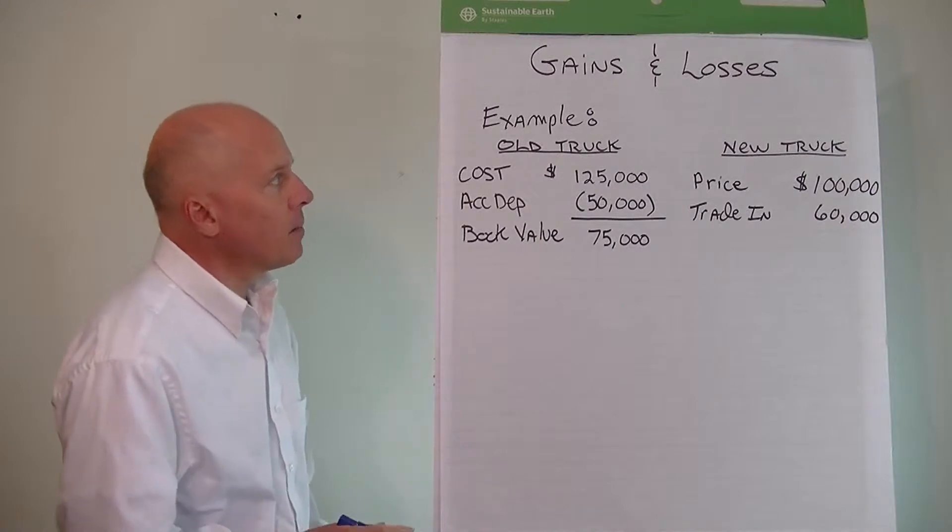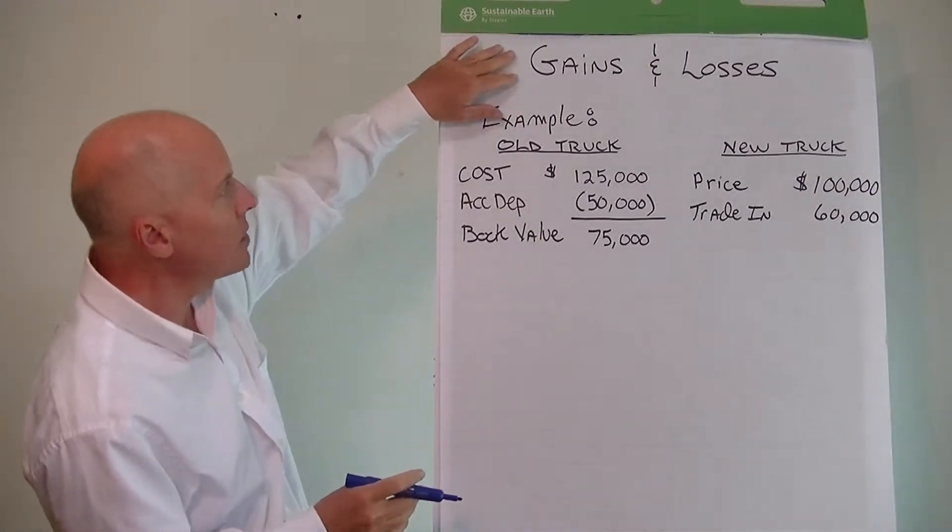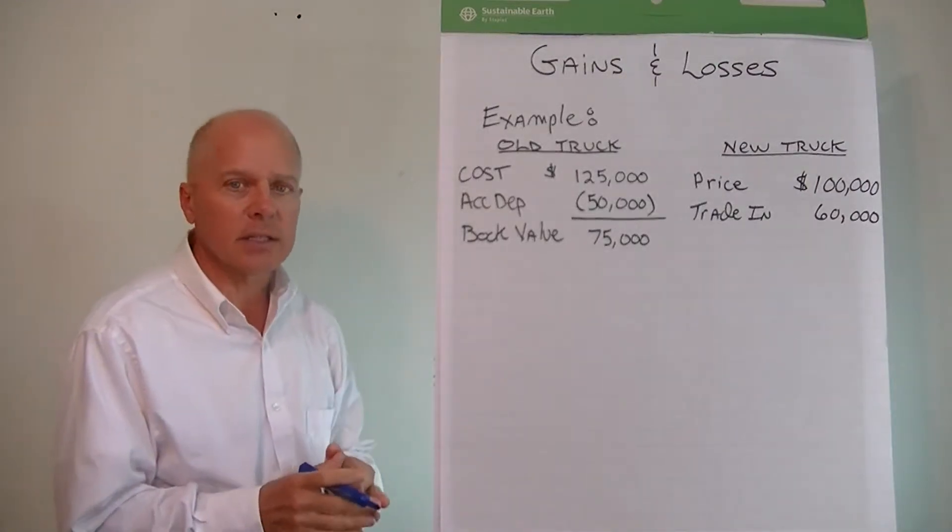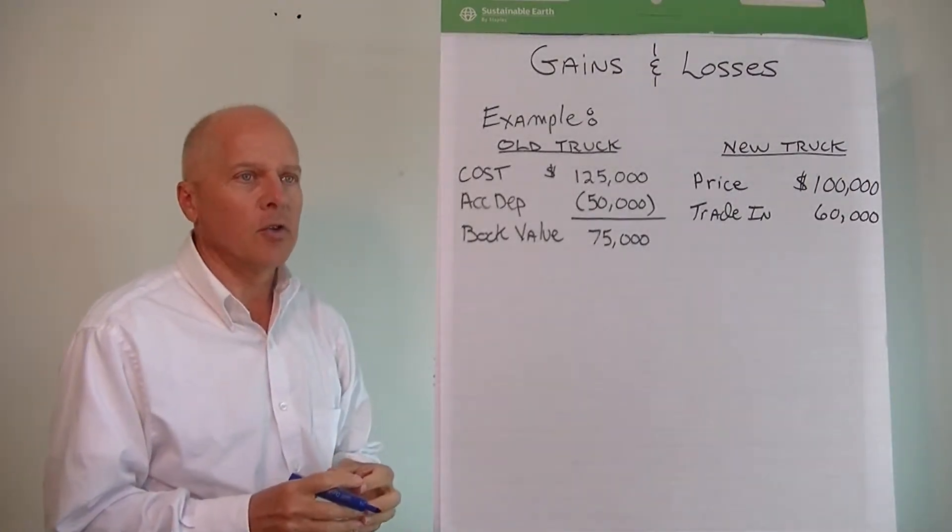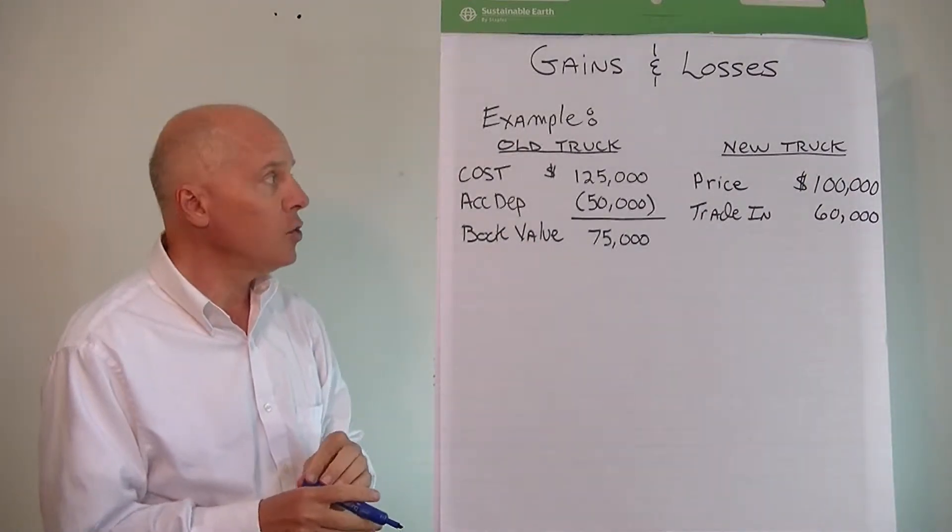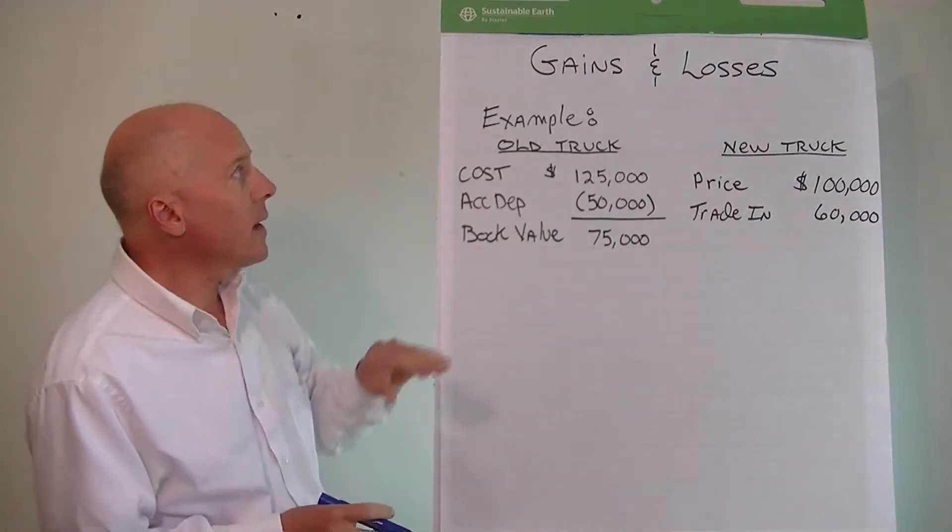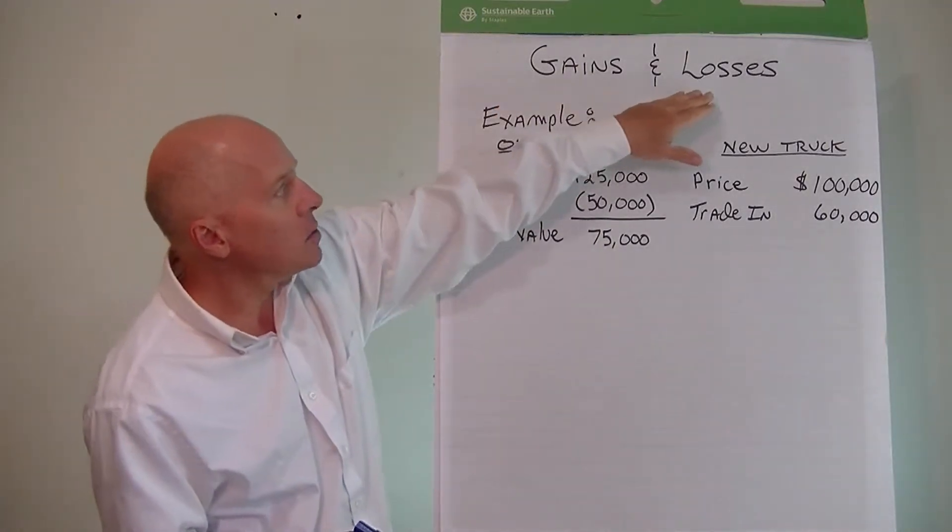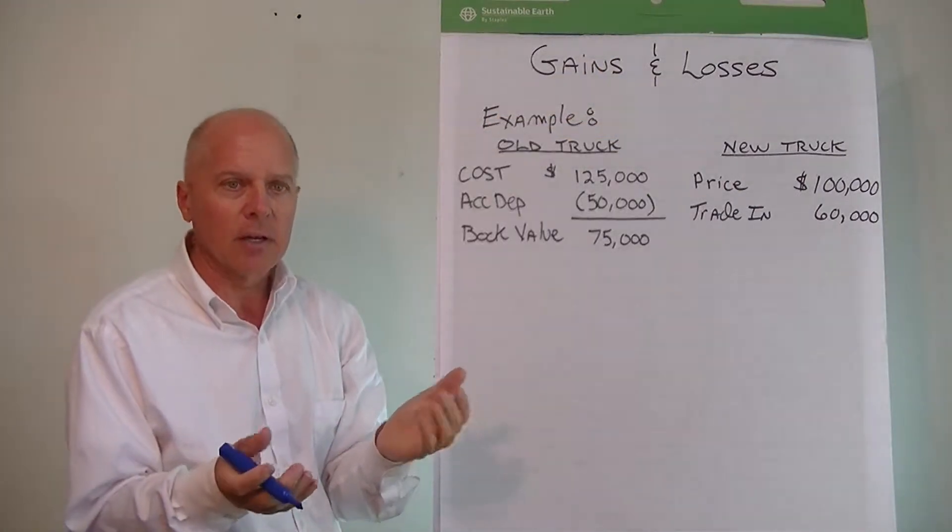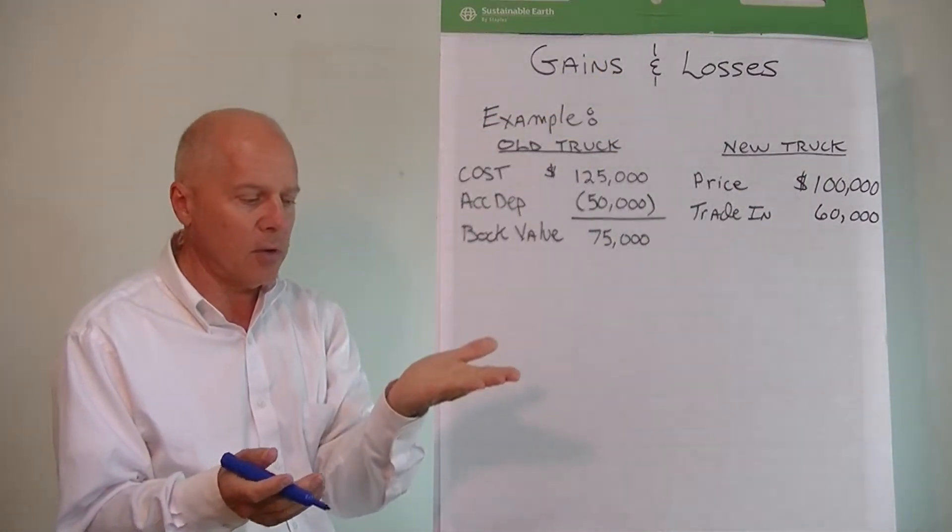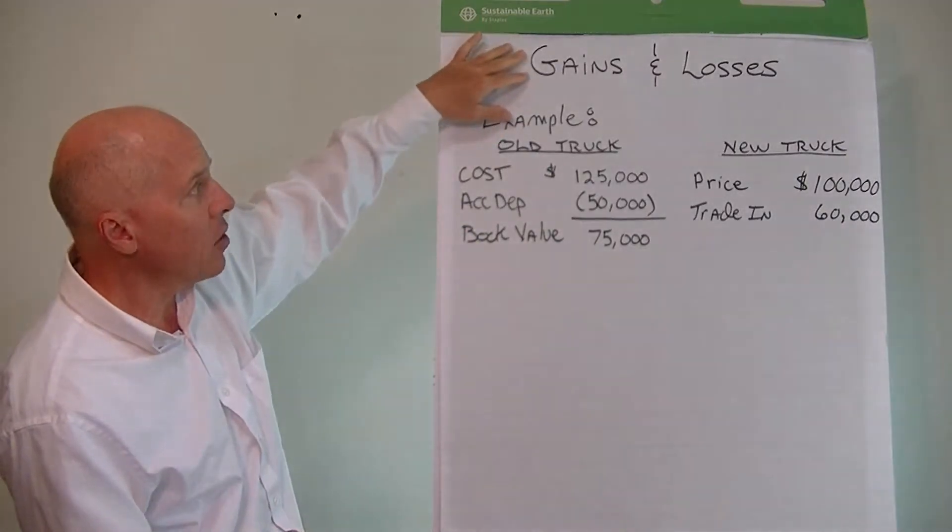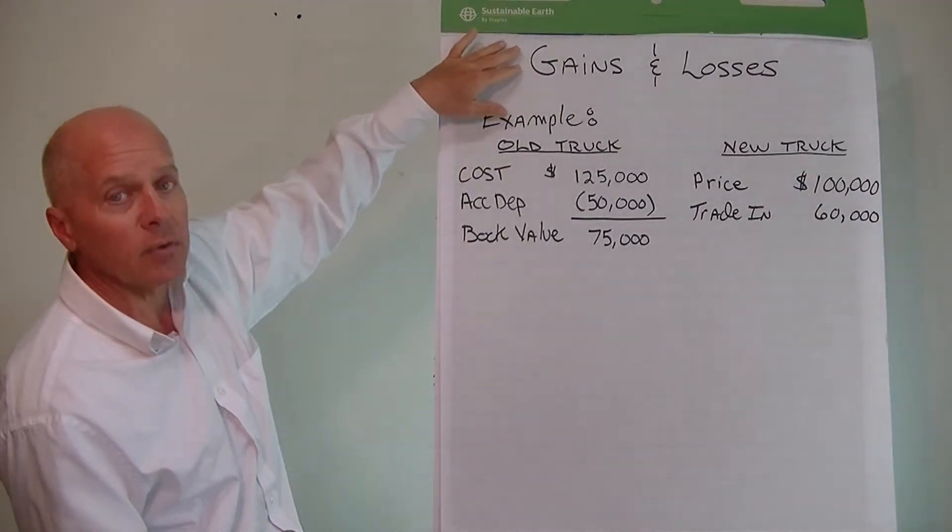In this lesson we want to talk about gains and losses, which relates to fixed assets. If you have fixed assets and you sell those fixed assets before you use them up during their useful life, then you will recognize a gain or loss on the sale. The gain or loss is calculated by comparing the book value of the asset to the amount that you receive, and you will report gains and losses as separate line items on the income statement.